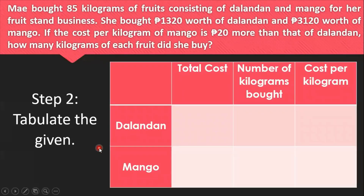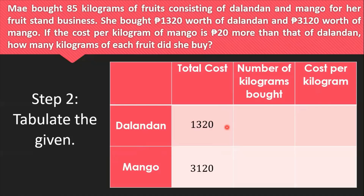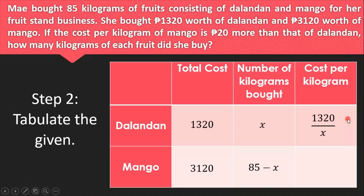Step 2 is to tabulate the given. The table has columns for total cost, number of kilograms bought, and cost per kilogram for both dalandan and mango. The total cost of dalandan is 1,320 pesos and for mango is 3,120 pesos. The number of kilograms is x for dalandan and 85 minus x for mango. The cost per kilogram is found by dividing total cost by kilograms bought: 1,320 over x for dalandan, and 3,120 over (85 minus x) for mango.